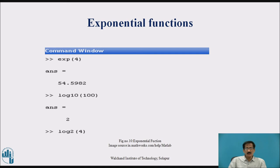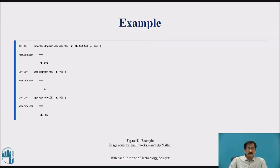The command exp(4) will give the answer 54.5982. log10(100) gives the log of 100 to the base 10, answer is 2. log2(4) gives log of 4 to the base 2. nthroot(100, 2) gives the answer 10. sqrt(4) is the square root of 4, answer is 2. pow(2, 4) — that is 2 raised to 4 — gives the answer 16.